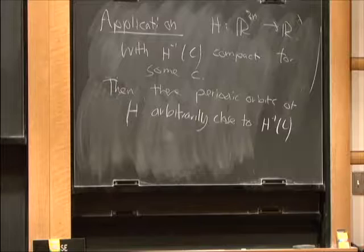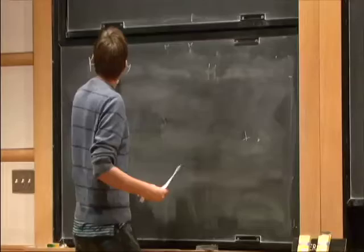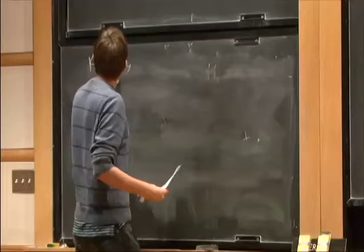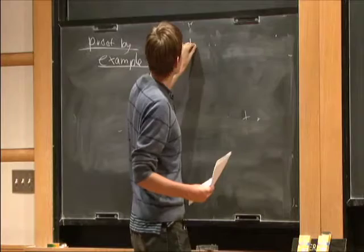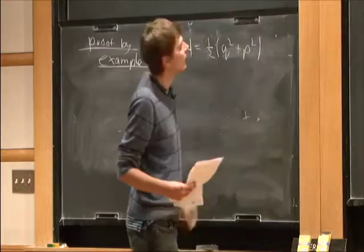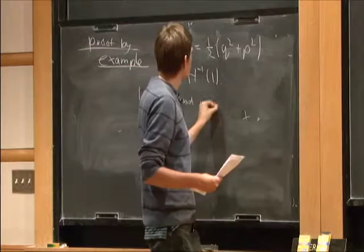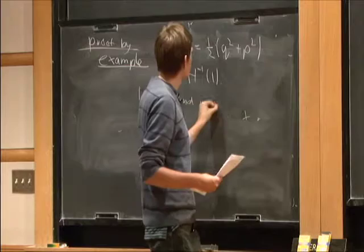I'm going to prove this by example, very similar to the setup we've been using. The Hamiltonian I'll look at is H = Q² + P², and the level set I'm going to look at is H^{-1}(1). We know where all the periodic orbits are, but let's pretend we don't. Periodic orbit here means periodic orbit of any period — the periods get very long near H^{-1}(C).